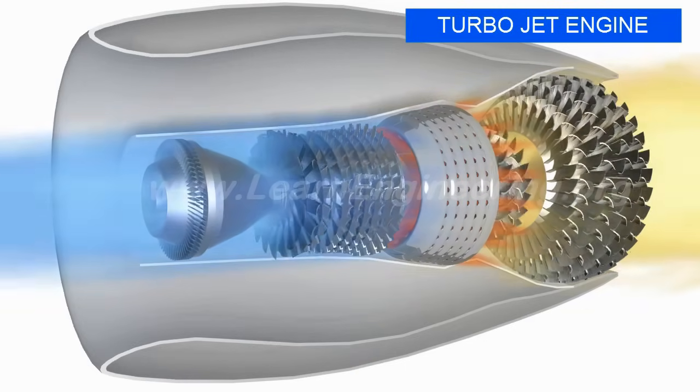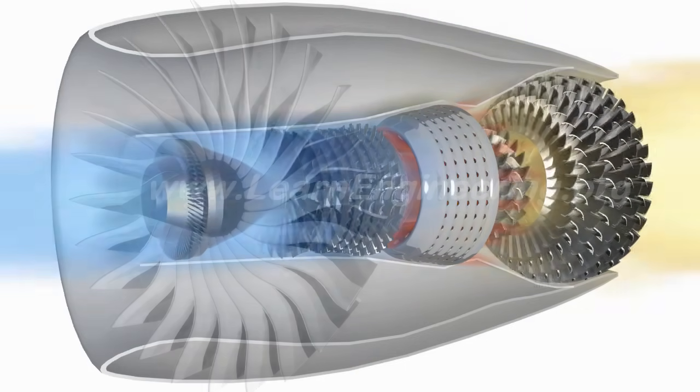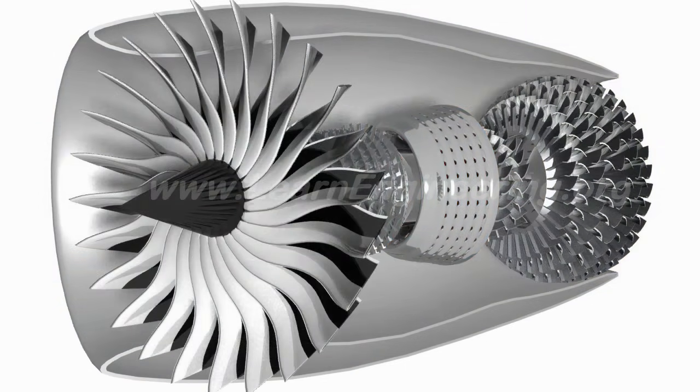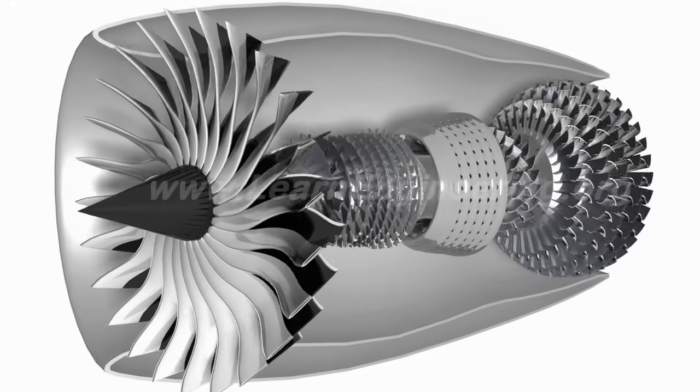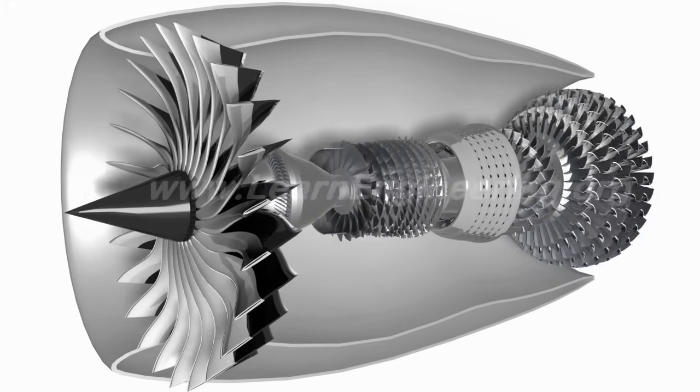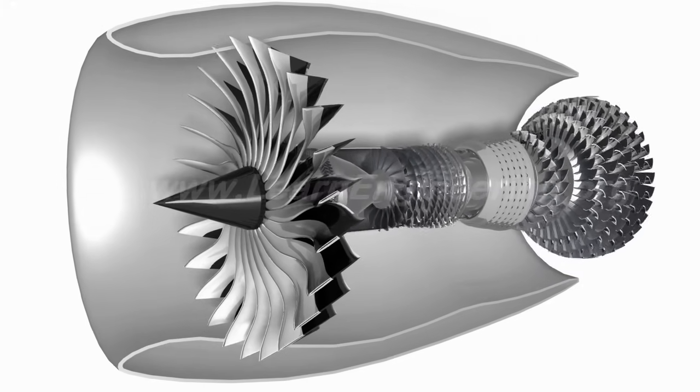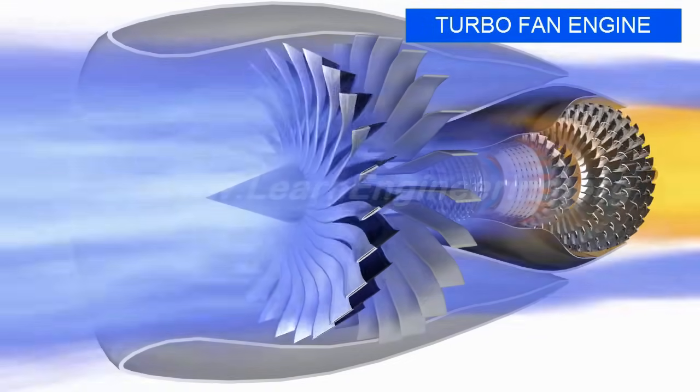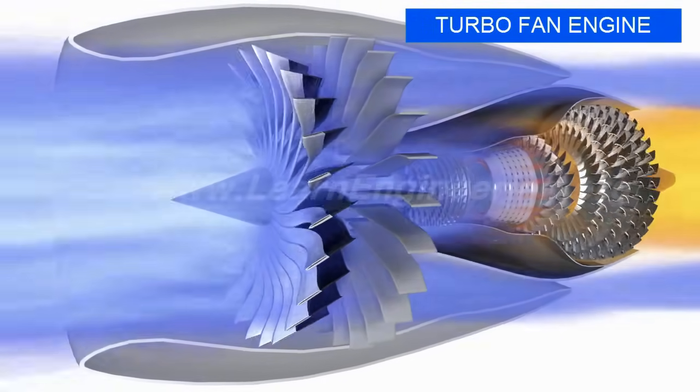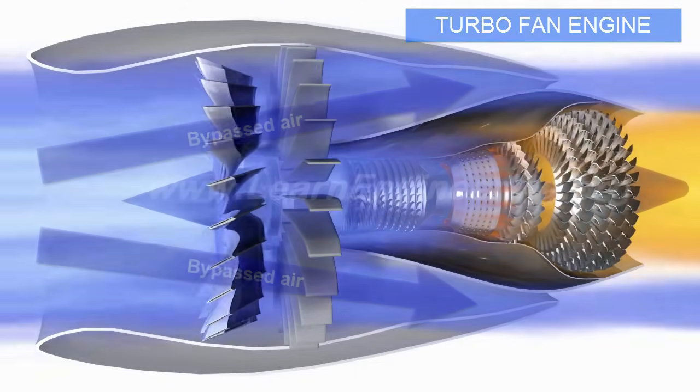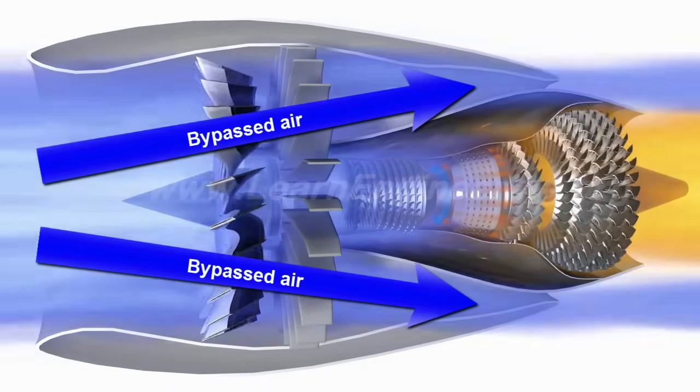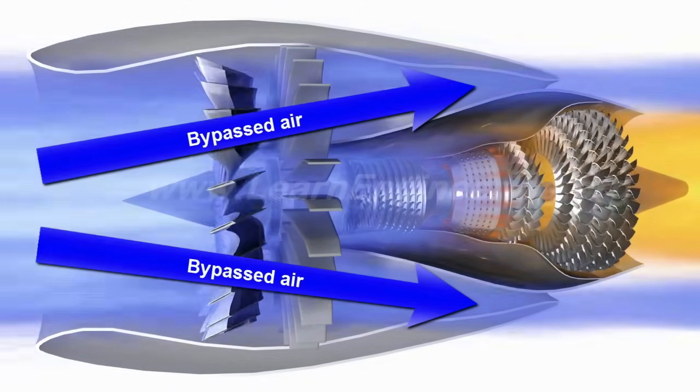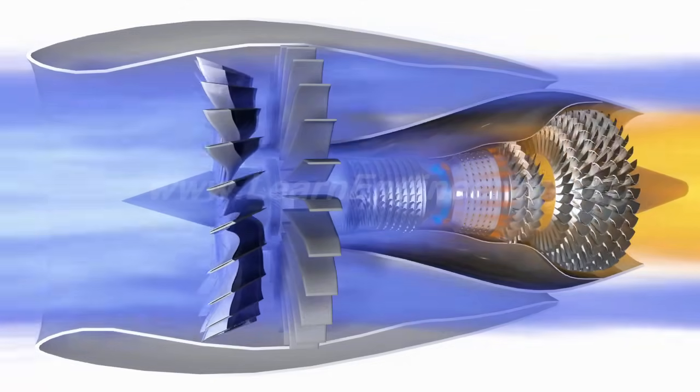A revolutionary improvement was made to this engine by fitting a large fan with a low-pressure spool. Such engines are called turbofan engines and almost every commercial aircraft runs on them. A turbofan engine bypasses a huge amount of air. The ever-narrowing bypass duct provides a good jet velocity to the bypassed air.